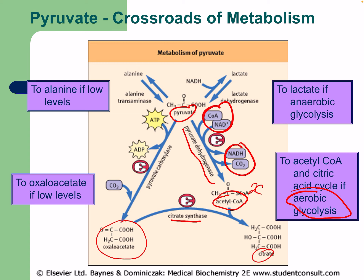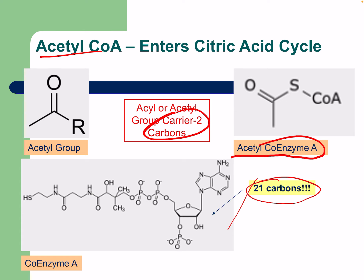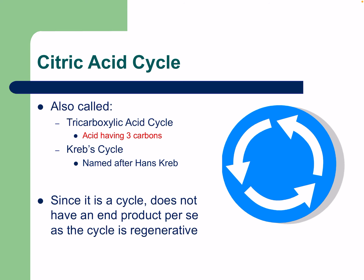This is aerobic metabolism. Acetyl-CoA enters the citric acid cycle — it has an acetyl group carrying two carbons, along with the coenzyme A portion, which actually has 21 carbons but is removed and does not enter the cycle. The citric acid cycle also has different names: it's called the tricarboxylic acid cycle or TCA, or the Krebs cycle, named after Hans Krebs.